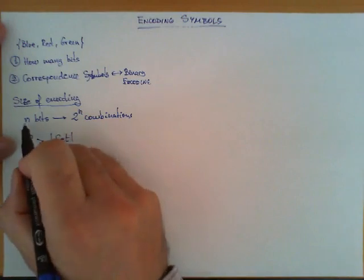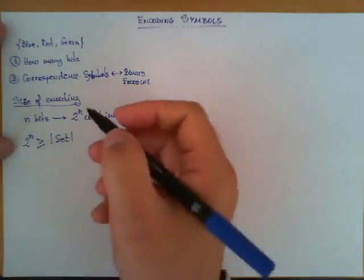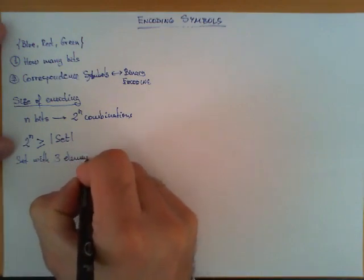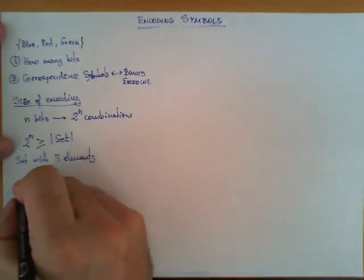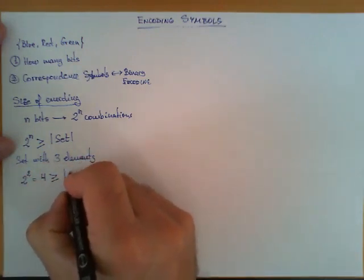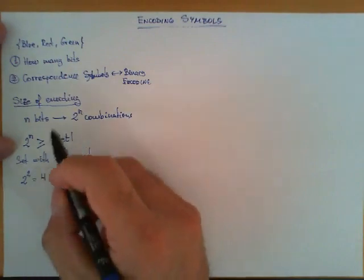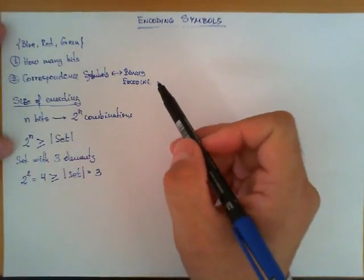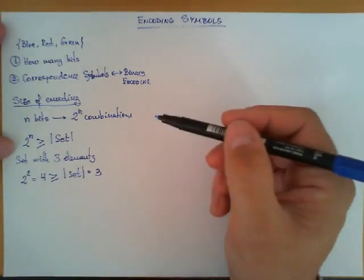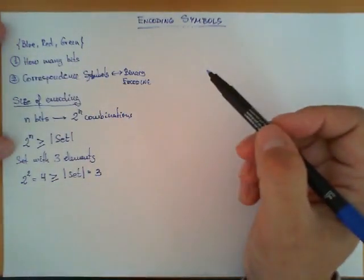In other words, 2 to the n, or if I decide to use n bits, 2 to the n should be larger than the number of elements in our set. In our example we have a set with three elements. If I take 2 bits for example, then I have 2 to the 2 which equals 4, and 4 is larger or equal to the cardinality of my set, which is 3. I couldn't encode them with one single bit because with one single bit I only would have two combinations, 0 and 1.